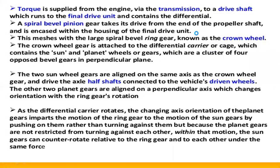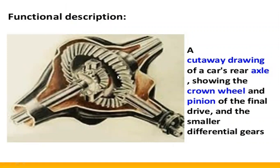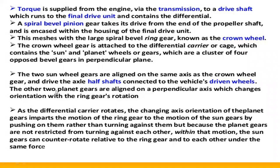The sun and planet gears are attached to the crown wheel gear. The two sun wheel gears are aligned on the same axis as the crown wheel gear and drive the axle half-shafts that connect to the vehicle's driven wheels. The two planet gears are aligned to a perpendicular axis which changes orientation with the ring gear's rotation. As the differential carrier rotates, the changing axis orientation of the planet gears transmits the motion of the ring gear to the sun gears, allowing the sun gears to counter-rotate relative to the ring gear and to each other under the same force.